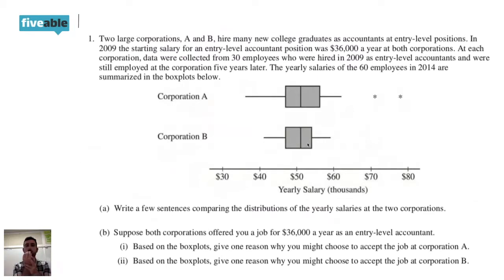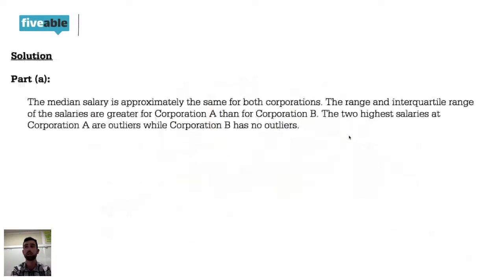And essentially, that means the data is more concentrated. So we have a lot of data points that are in between here and here. And when I say a lot of data points, I mean 50% of the data, right? Because each box represents 25%. And if we look at the scoring guide, right there, the range and the IQR of salaries are greater for Corporation A than for Corporation B. So right there is where you see the point that they give you for comparing spread.